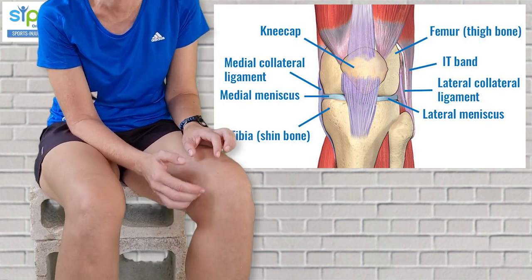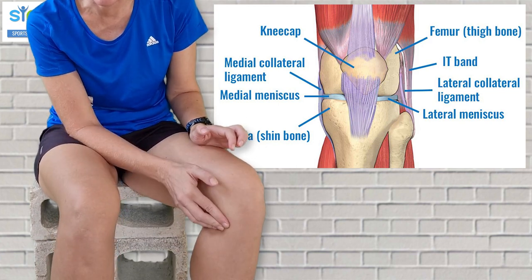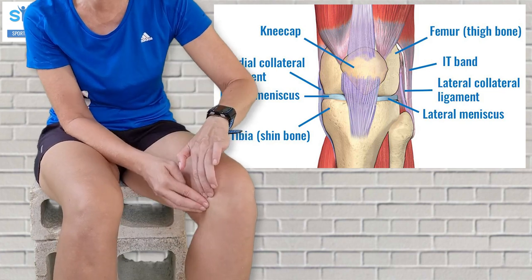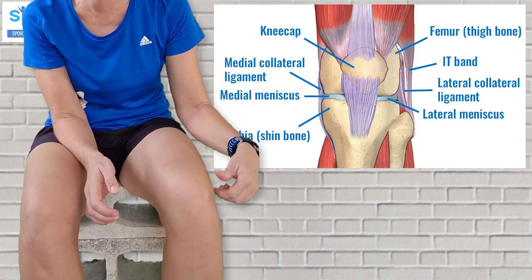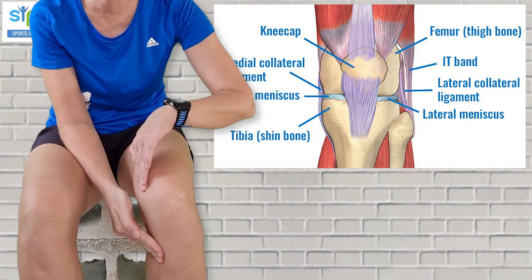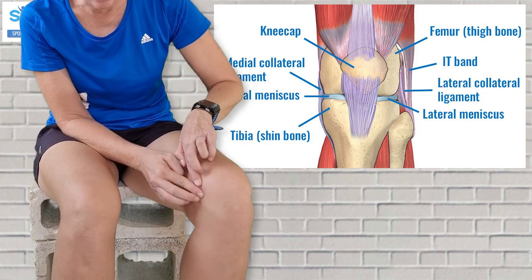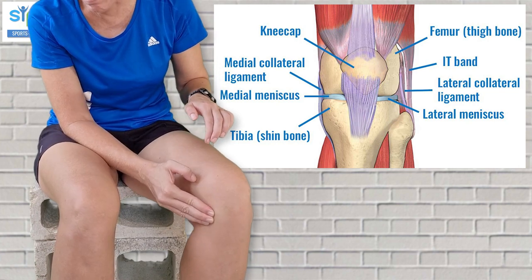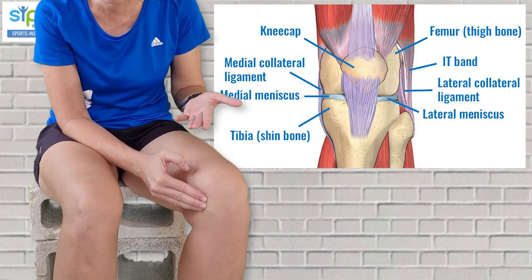Your medial collateral ligament lies across that joint line because it stops the knee from gapping on this side. Whenever you've got a force that does that or your knee twists in, that ligament stops it from separating the joint surfaces. It runs in that area and the problem is it runs across the medial meniscus.